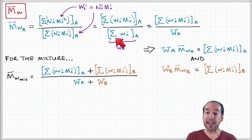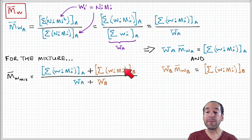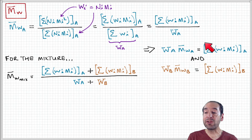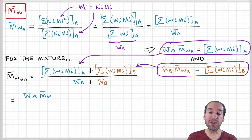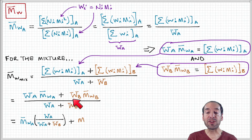In the same way that we examined the weight average molecular weight for polymer A, we have the total sum of the product of Wi·Mi for polymer A plus the sum of Wi·Mi for polymer B, over the total weight of polymer A plus polymer B in the sample. We can use our previous result and substitute for these summations in the numerator: the product of the weight of polymer A times its weight average molecular weight plus the weight of polymer B times its weight average molecular weight, over the total weight.